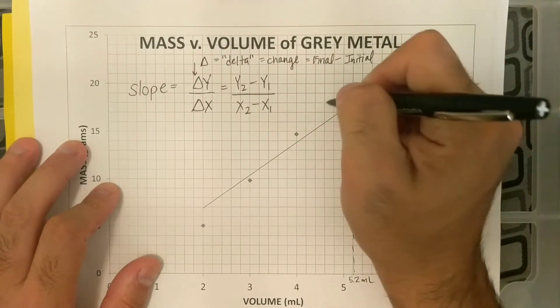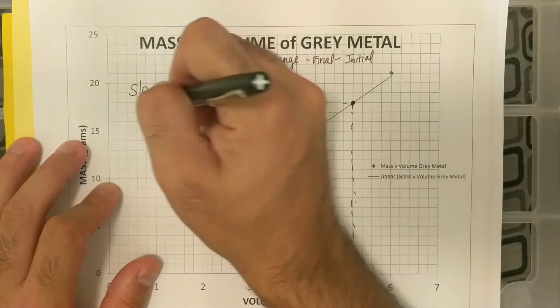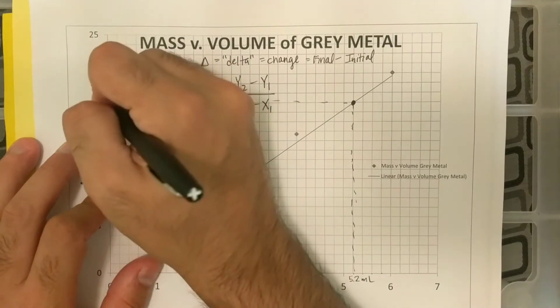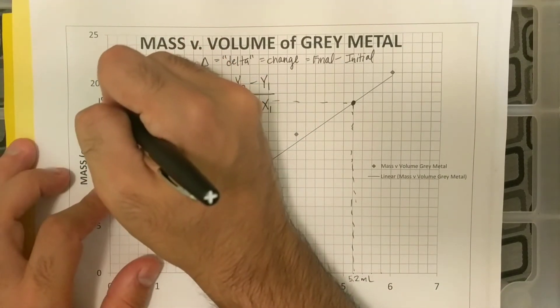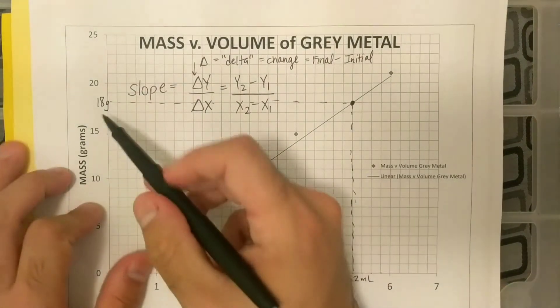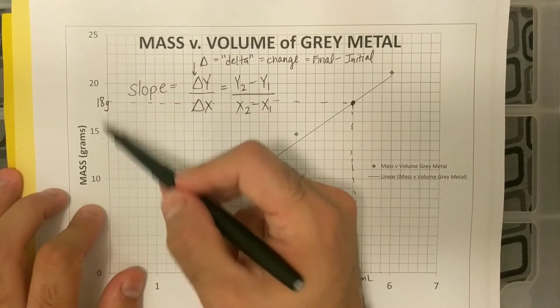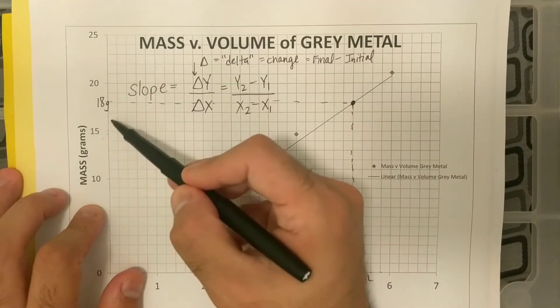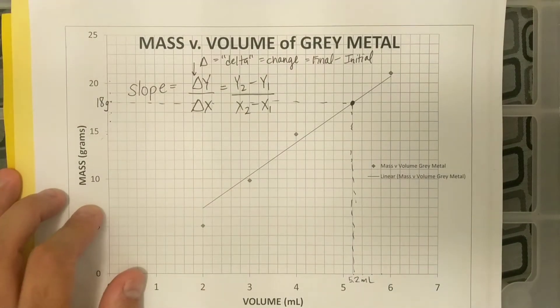And then if I go over on the y-axis, it looks like it's at 15, 16, 17, 18 grams, right? And so how did I do that? There were four lines between 15 and 20, so 15, 16, 17, 18, 19, 20, okay?